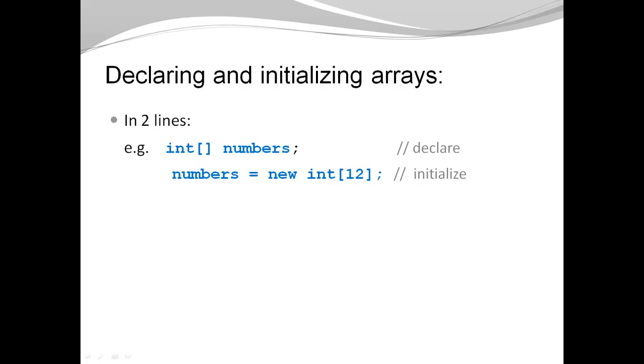When you declare and initialize an array, you can do that in two steps or in a single step. So I could say I declare a variable of type integer array. I name my variable numbers. And then in a second step, I assign a new integer array of size 12 to my numbers. I could do the same thing in a single line. I could say I declare a variable called numbers of type integer array, and I assign it a new integer array of size 12.